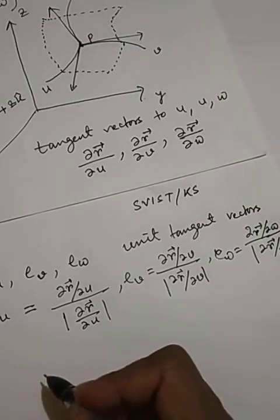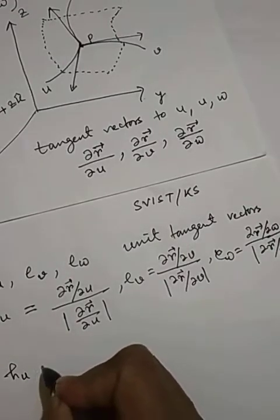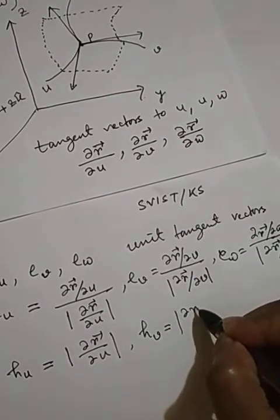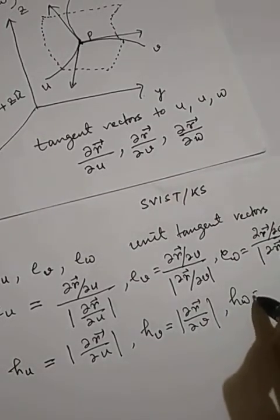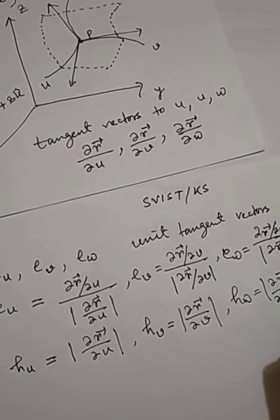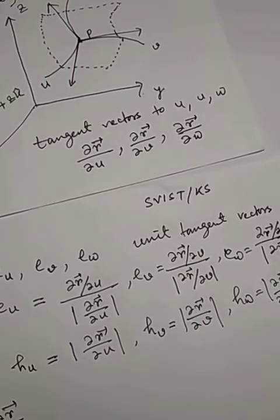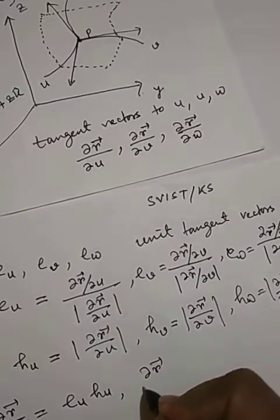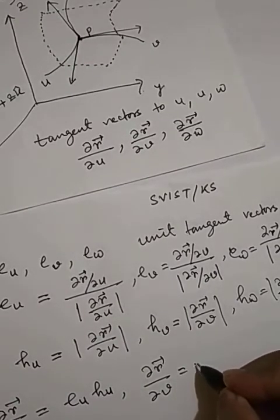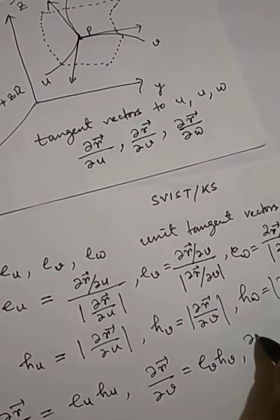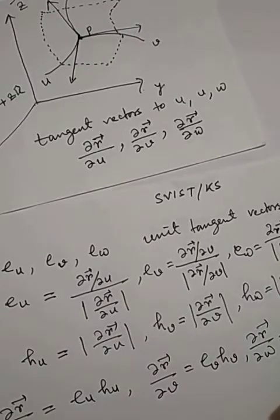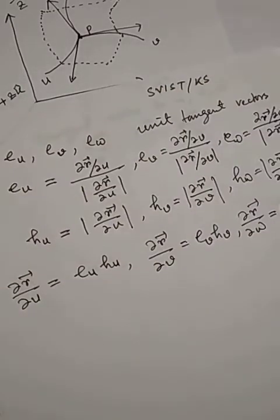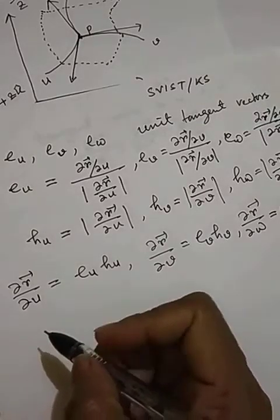If we take h_u as modulus of del r / del u, h_v as modulus of del r / del v, and h_w as modulus of del r / del w, then the tangent vectors are: del r / del u equals h_u times e_u, del r / del v equals h_v times e_v, and del r / del w equals h_w times e_w.